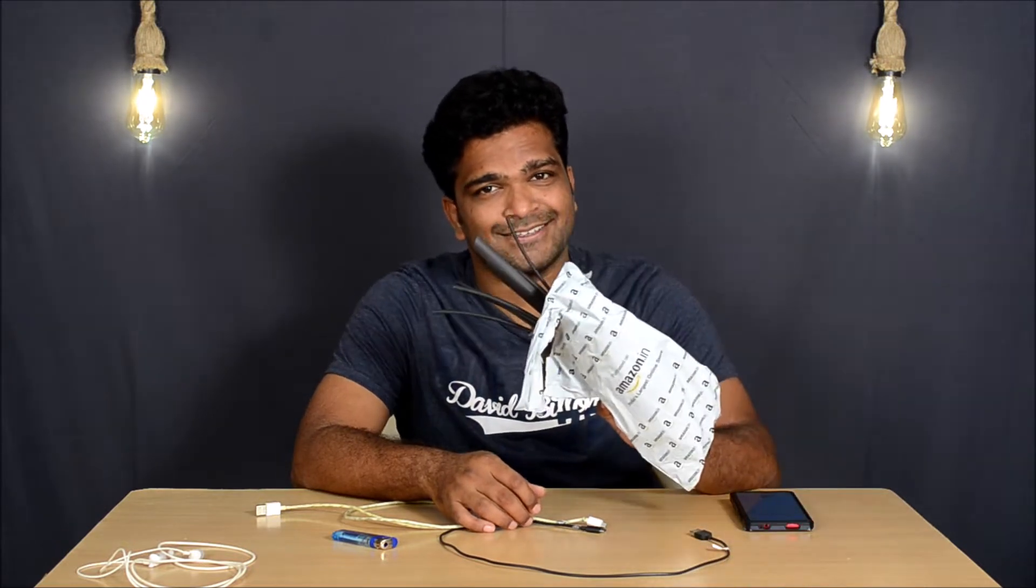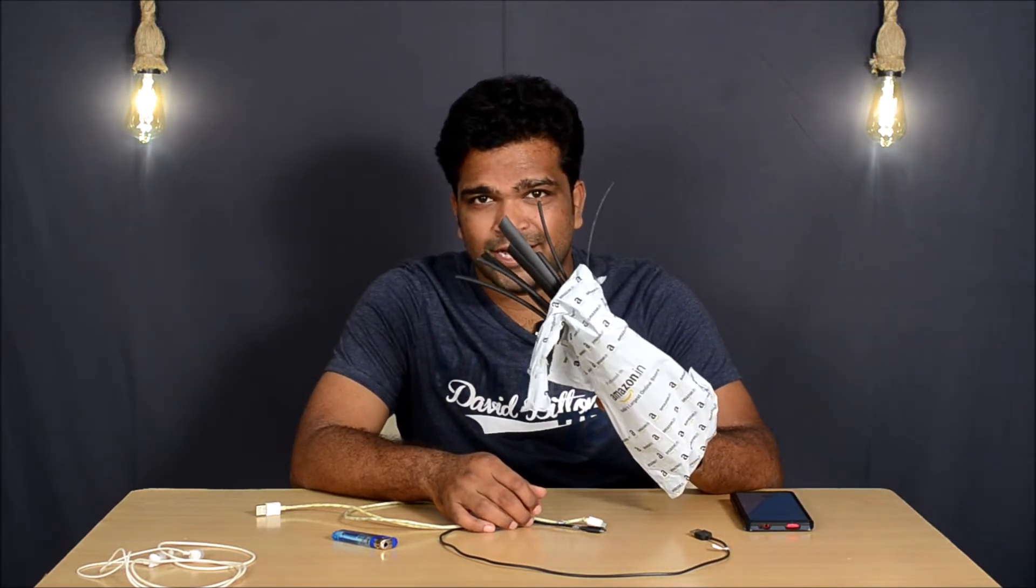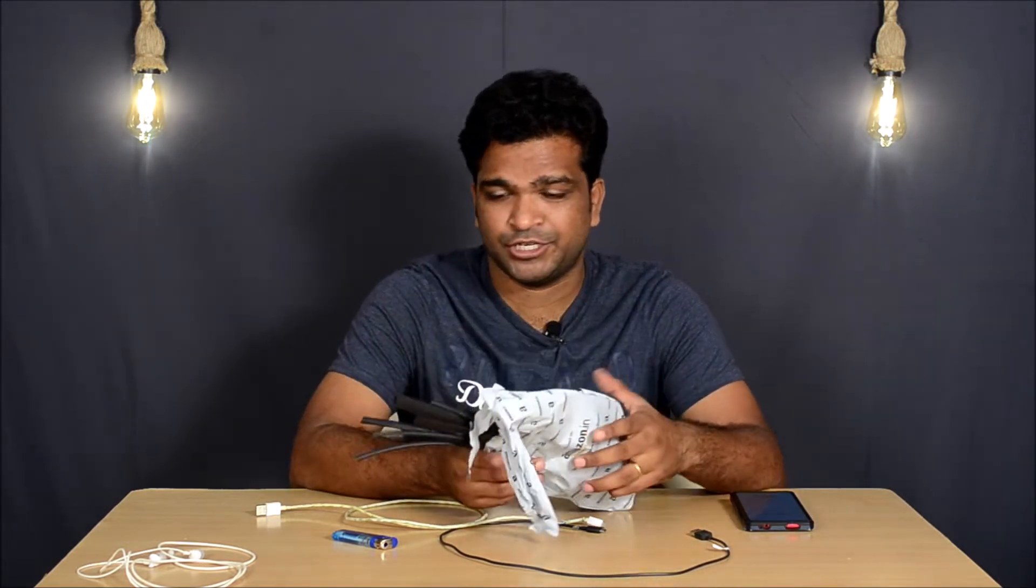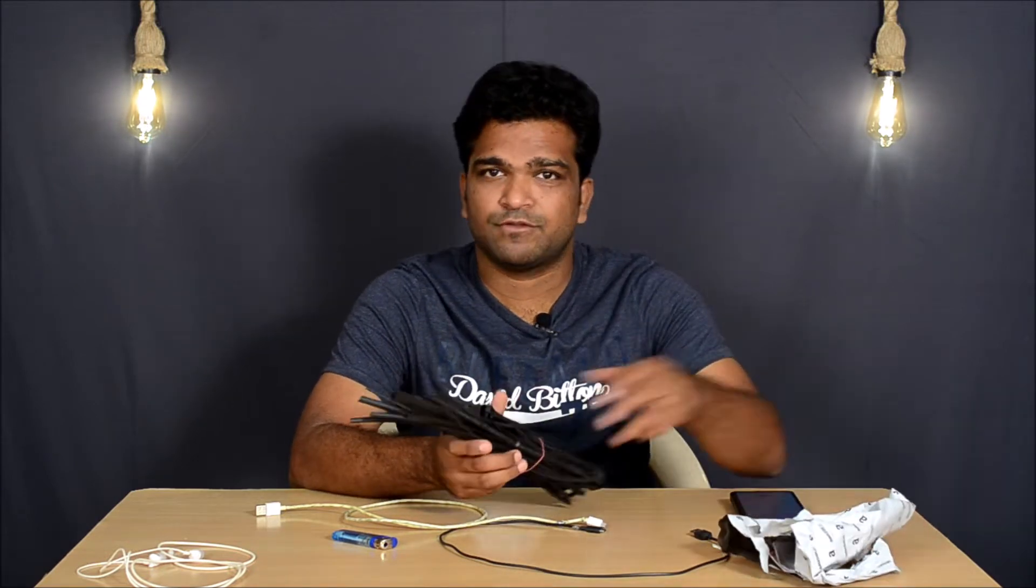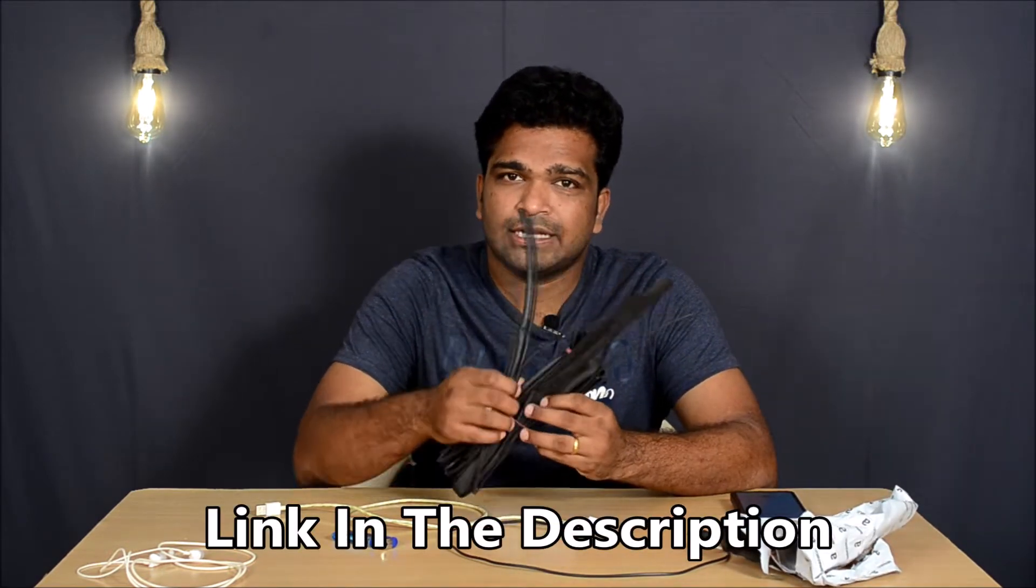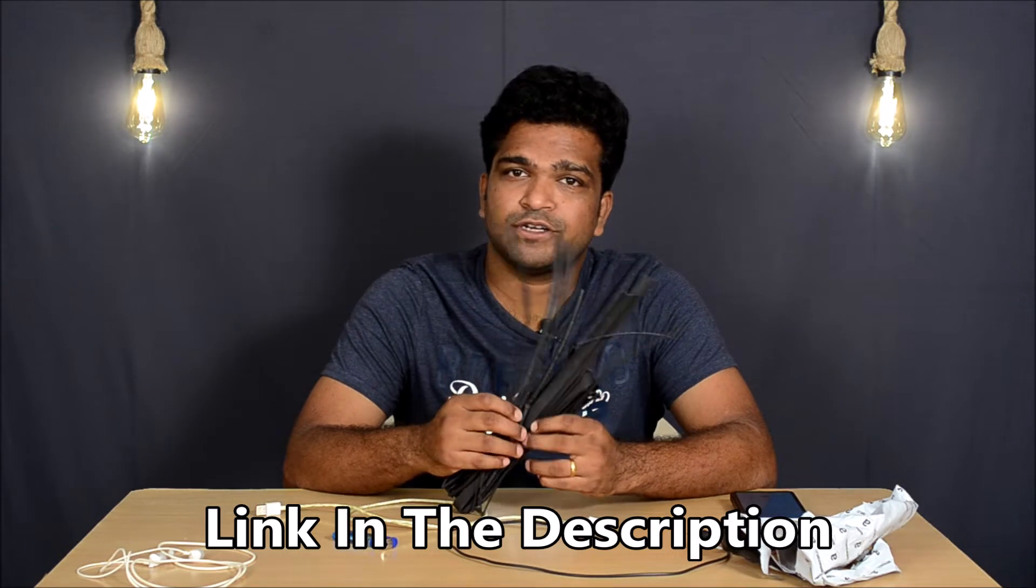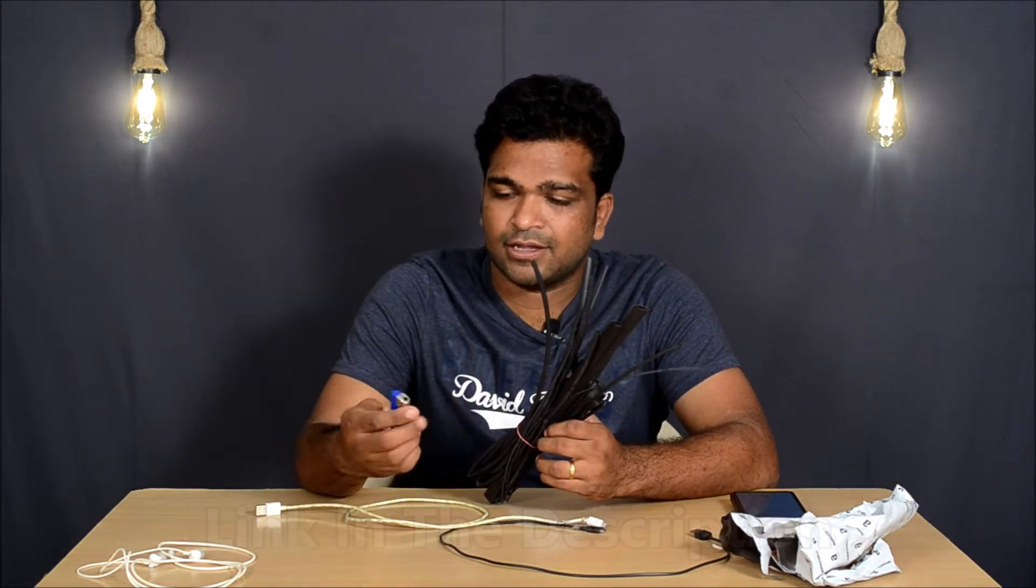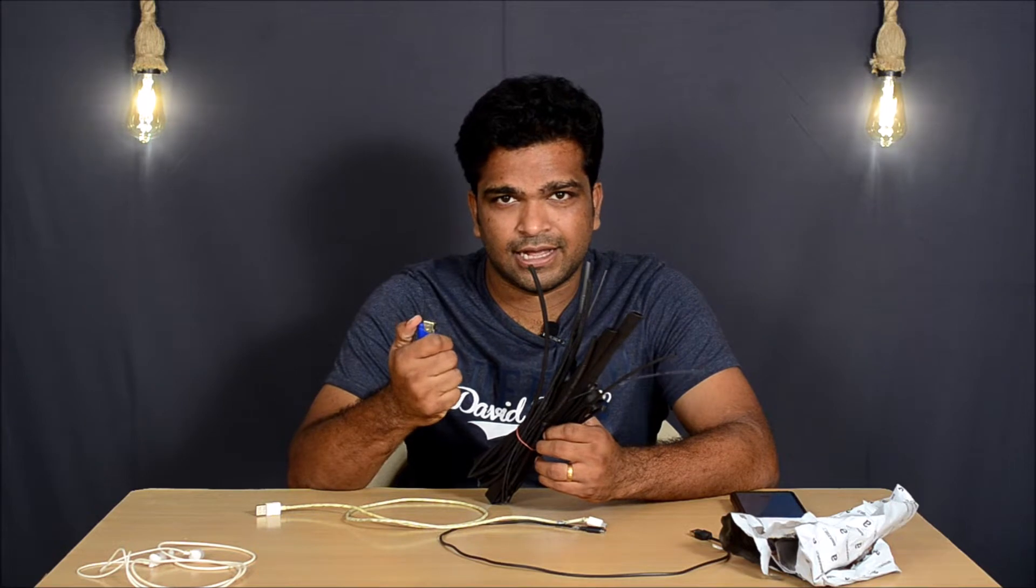These. They are called heat shrink cables or heat shrink tubes. I got them from Amazon and you can get a bunch of these in different sizes to fit your different cables. And you need a lighter, and that's all.